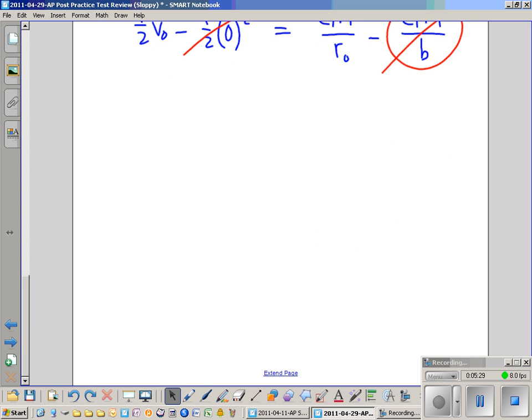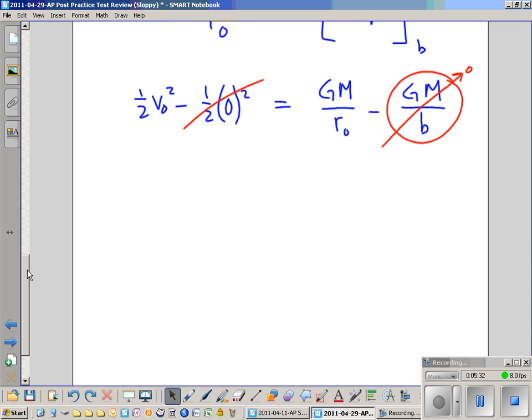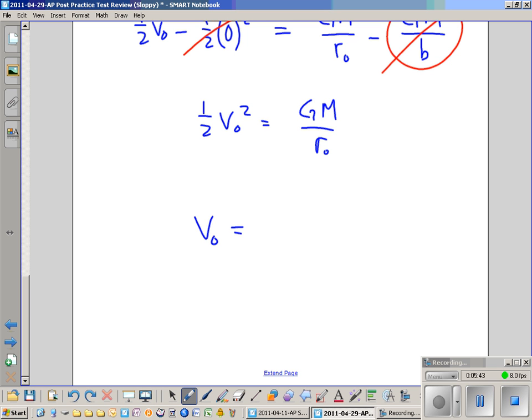So now we have one half v naught squared is equal to GM over r naught, and solving for v naught, our escape velocity, we get exactly the same result we had before. v naught is equal to the square root of 2GM over r naught, where G is the universal gravitational constant, M is the mass of Earth or whatever it is that we're escaping, and r naught is where we start. In this case, we're starting at Earth's surface. So we get exactly the same result as we did before.